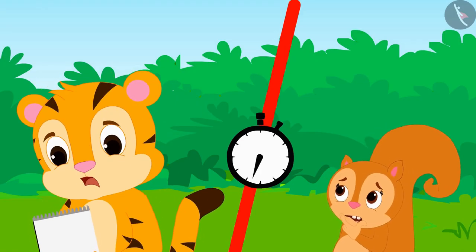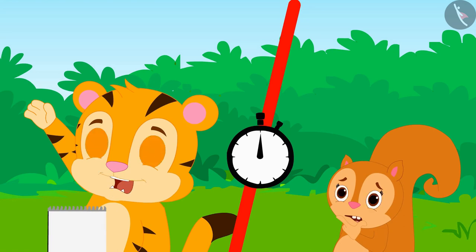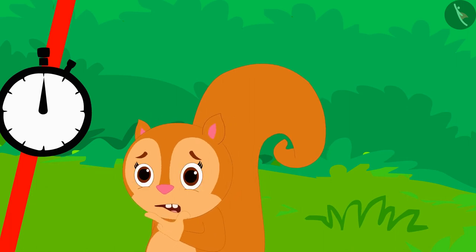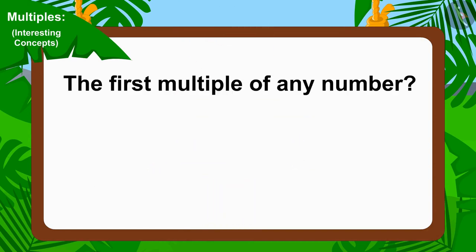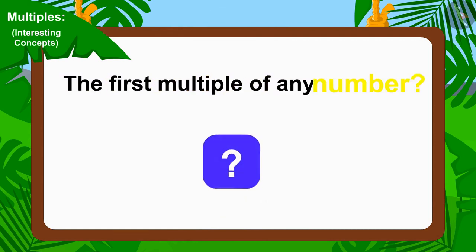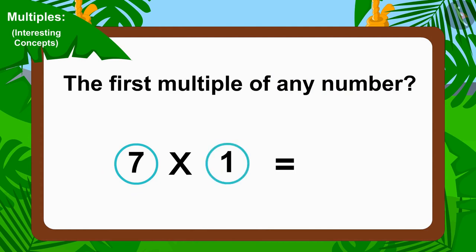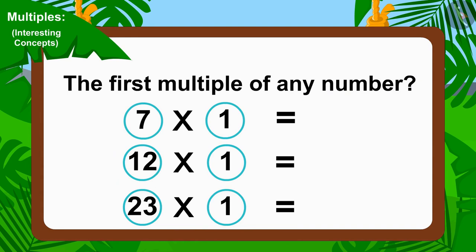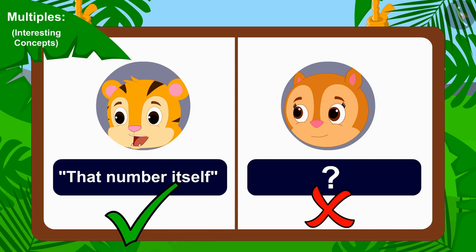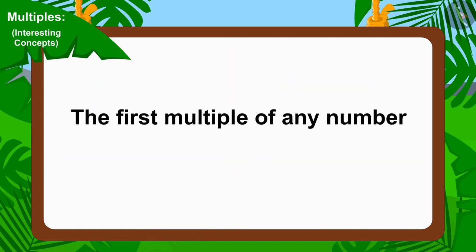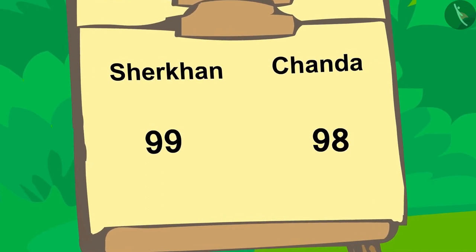Time started ticking and Chanda and Sheer Khan started thinking. When the time was up, Sheer Khan gave the answer: that number itself. Chanda could not think of an answer. Is Sheer Khan's answer correct? To find the first multiple of any number, we must multiply that number by one. Since any number multiplied by one equals the number itself, Sheer Khan's answer is absolutely correct. The first multiple of any number is that number itself. Sheer Khan is now one point ahead of Chanda.